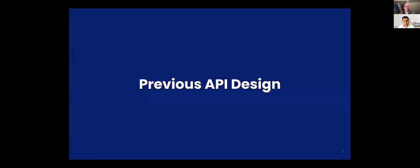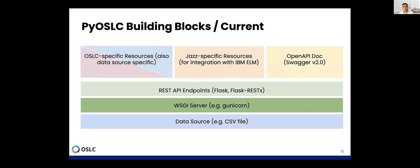Hello everyone, I will continue. I will talk about the previous API. I want to mention something that we did in the first version of the PyOSLC project. The previous API design had these building blocks: we used a CSV file for validating the data source, some other components for deploying the REST API and the OSLC API, and we created this SDK for having all the classes available for OSLC resources. We implemented integration with JIRA ALM and used Flask-RESTX for the open API or Swagger UI. The first version only worked with just one resource, which was a requirement data source.